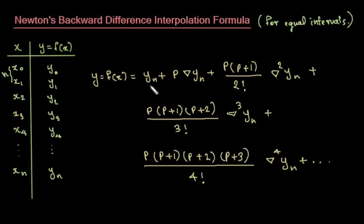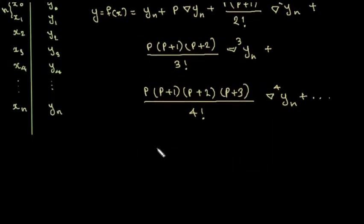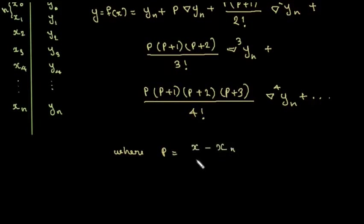Here yn, Δyn, Δ²yn, and so on are the backward differences, and where p is equal to (x − xn) / h.